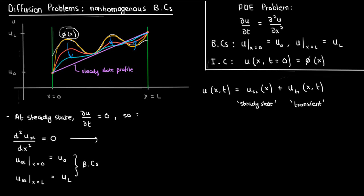It's very easy to solve this ODE. If you integrate once, you'll get du_ss by dx equals c1, and if you integrate it a second time, you'll get u_ss equals c1*x plus c2, which is a straight line, exactly what I said earlier.